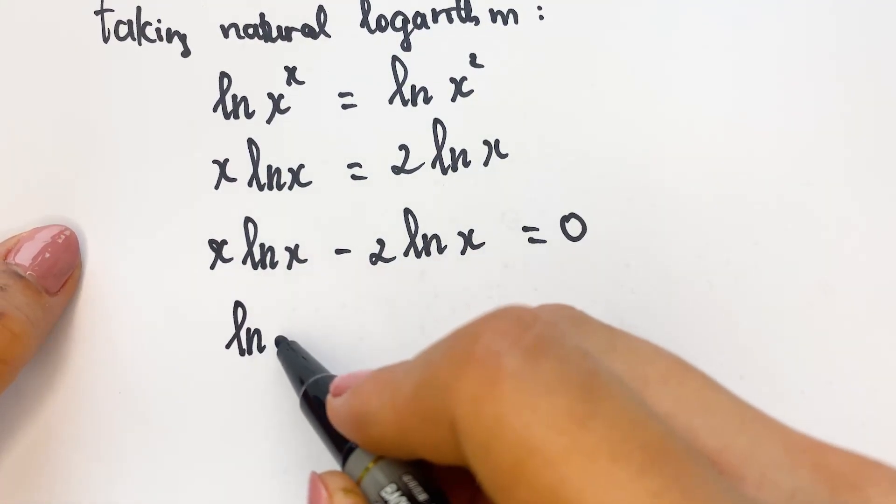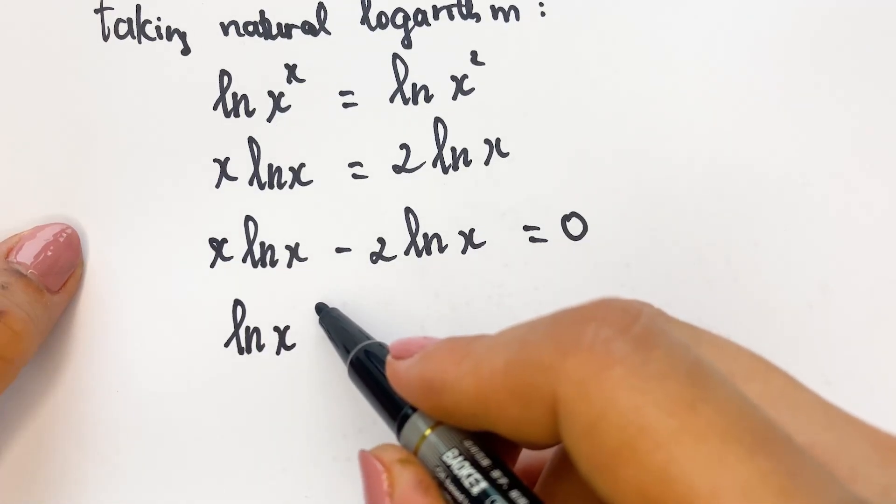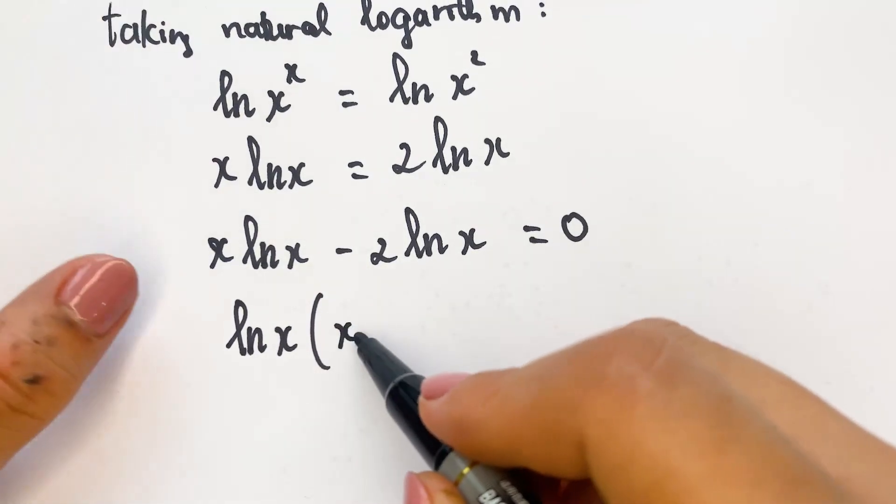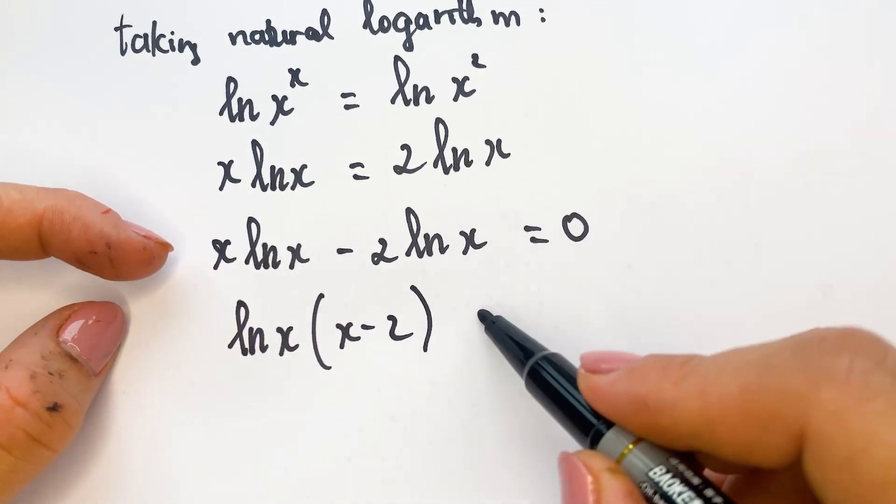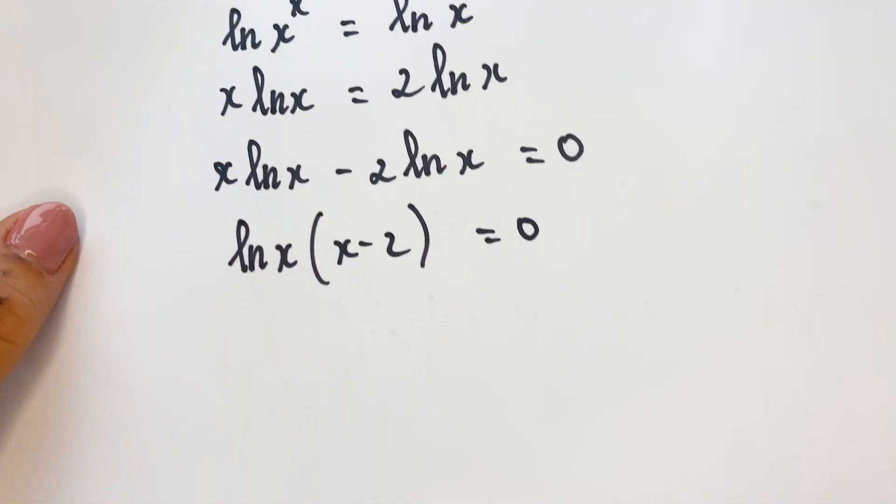Natural logarithm of x is a common factor, so therefore we can say ln x times (x minus 2) equals zero.